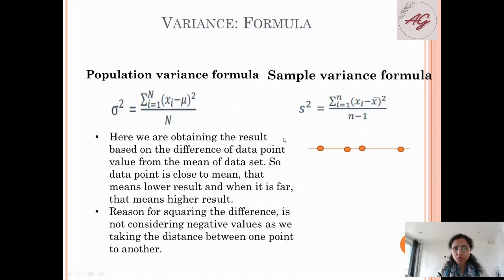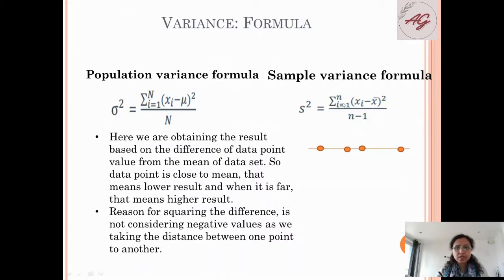For population variance, this is the formula; for sample variance, this is the formula. Variance is denoted as shown here. Capital N is the whole data set number, and this is a data point minus the mean. For sample variance we have a similar formula, but here we use N minus 1 — one data point from the sample data set is subtracted.